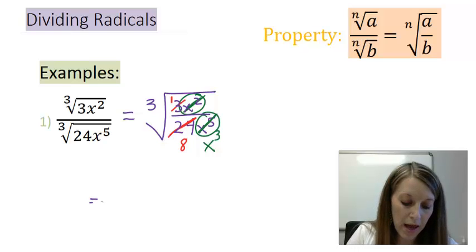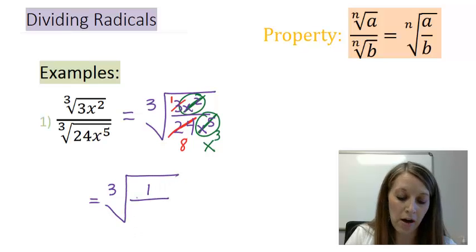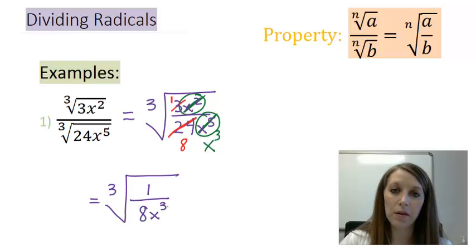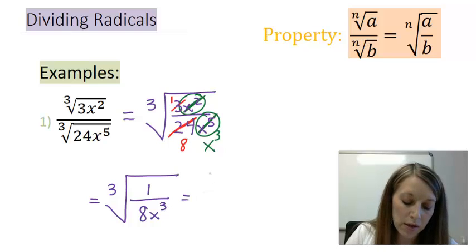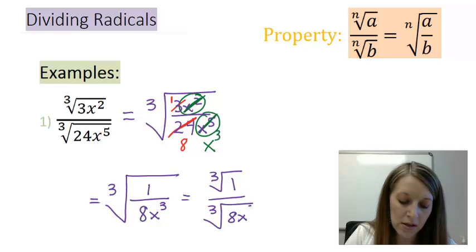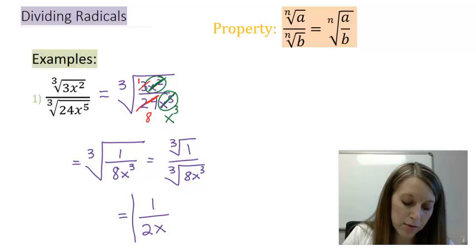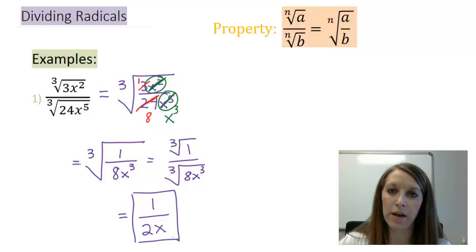So at this point, I have the cube root of 1 in the numerator, everything cancelled out. And then of 8x cubed in the denominator. Now, I split these back up again. So on the top, I have the cube root of 1. And in the bottom, I have the cube root of 8x cubed. So now I can simplify each of them individually. On the top, cube root of 1 gives me 1. On the bottom, cube root of 8 gives me 2. And the cube root of x cubed, my cubes cancel out, so I'm just left with x. So I have my most simplified answer here of 1 divided by 2x.